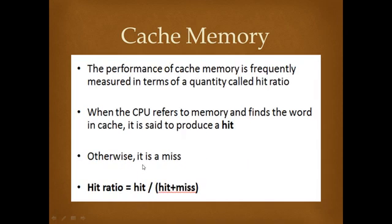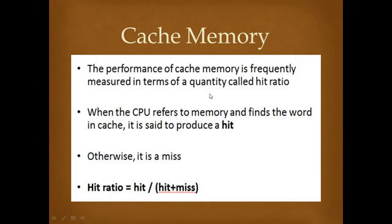The performance of cache memory is measured in terms of hit ratio. Hit ratio is the ratio of the number of hits to the total number of memory requests (hits plus misses). When the CPU requests data and it is found in the cache, it is called a hit; otherwise it is a miss. In case of a miss, the data is fetched from main memory — the cache makes a copy of it, and then it is transferred to the CPU.